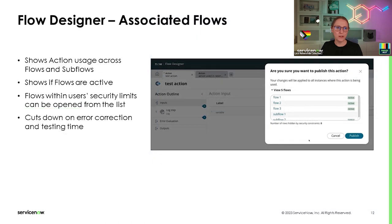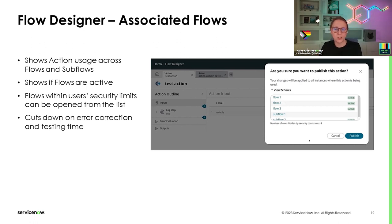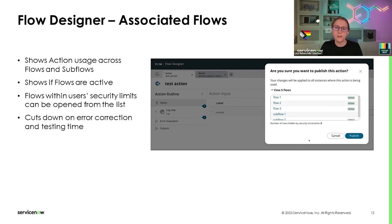For Flow Designer's action designer, there's a very exciting new feature that helps developers keep track of where their flow actions are being used. When you publish changes to an action, you get a pop-up showing all the flows and subflows that action is used in. You can also access it from the three-dot menu in the top right of action designer before you publish. You'll also be notified if any rows are hidden by security constraints, so you know if your action is used somewhere you can't see.